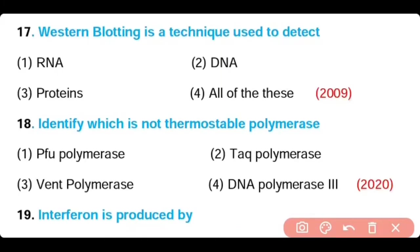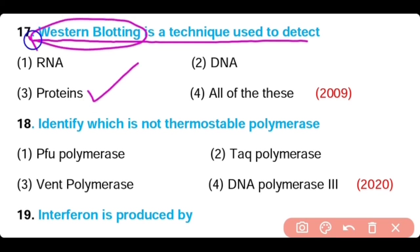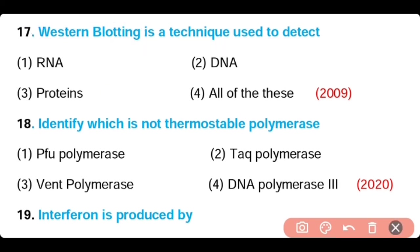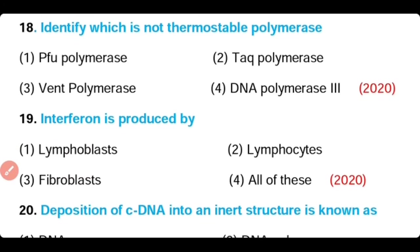Question 17: Western blotting technique is used to detect — RNA, DNA, protein, or all of these? Option C is correct. Western blotting technique is used to detect protein. Sometimes it is also known as protein immunoblot.